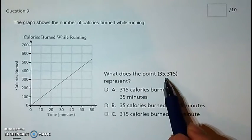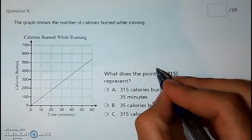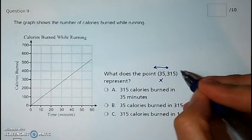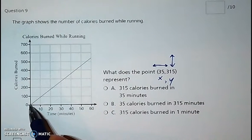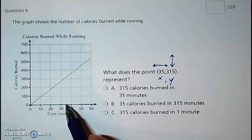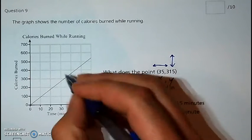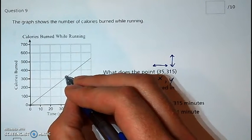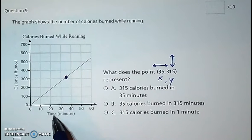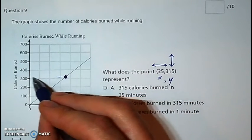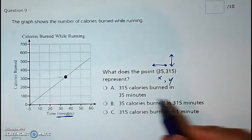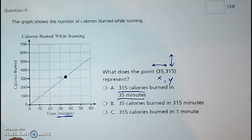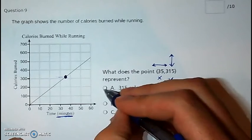What does the point (35, 315) represent? You always go right or left first — that's the x value — and then up or down for the y value. From the origin, go right 35, then up 315. That means in 35 minutes, how many calories can we burn? About 315 calories burned in 35 minutes. That's the only answer that actually makes sense.